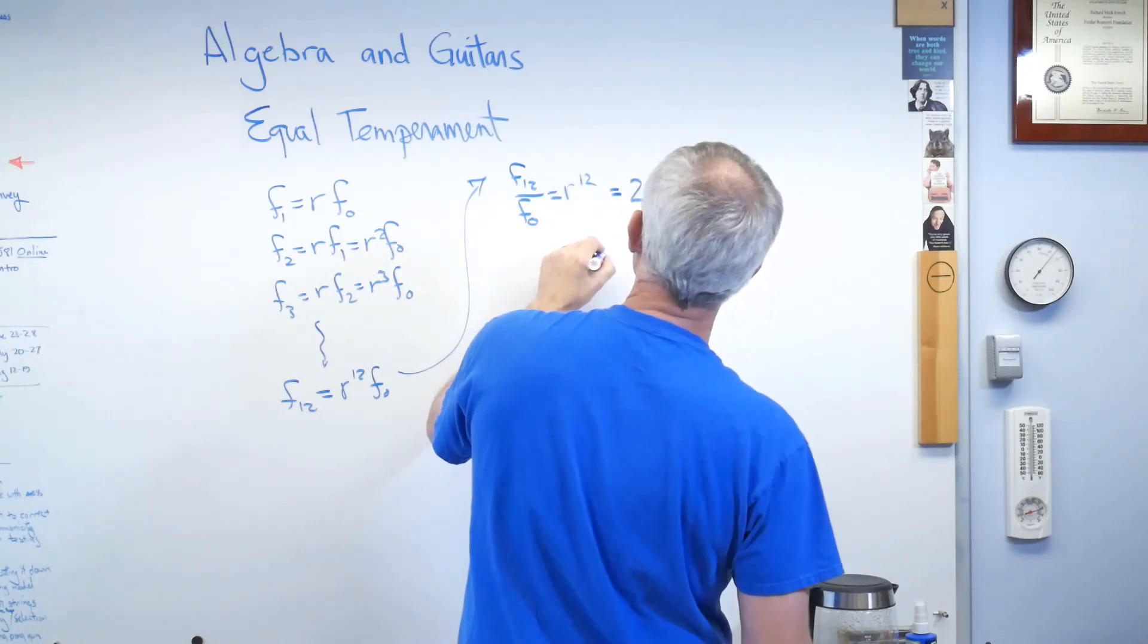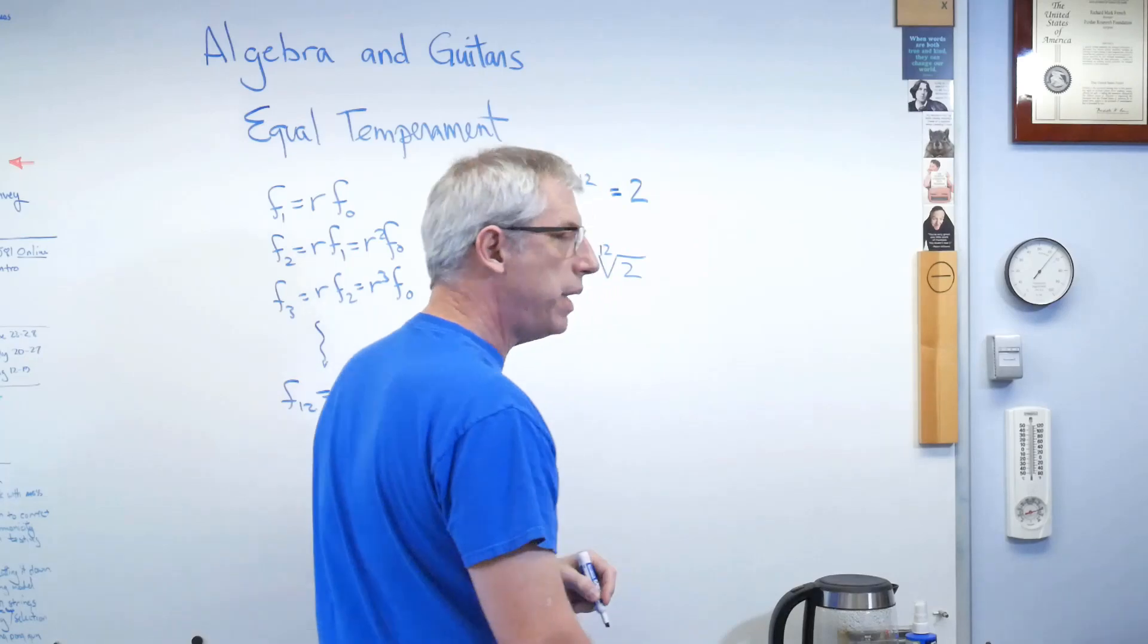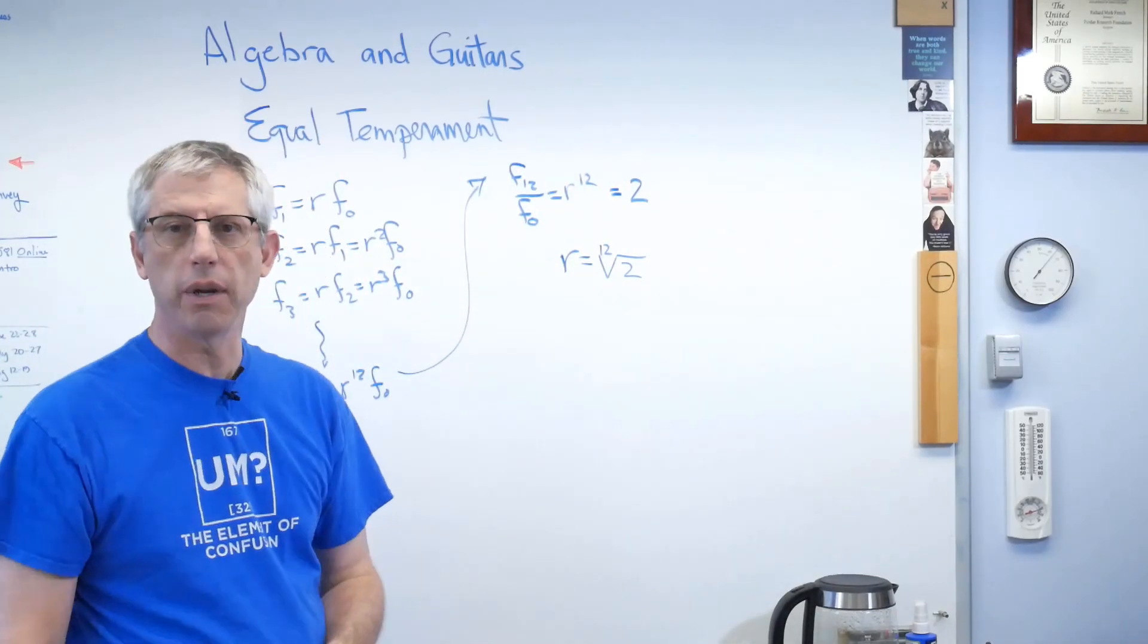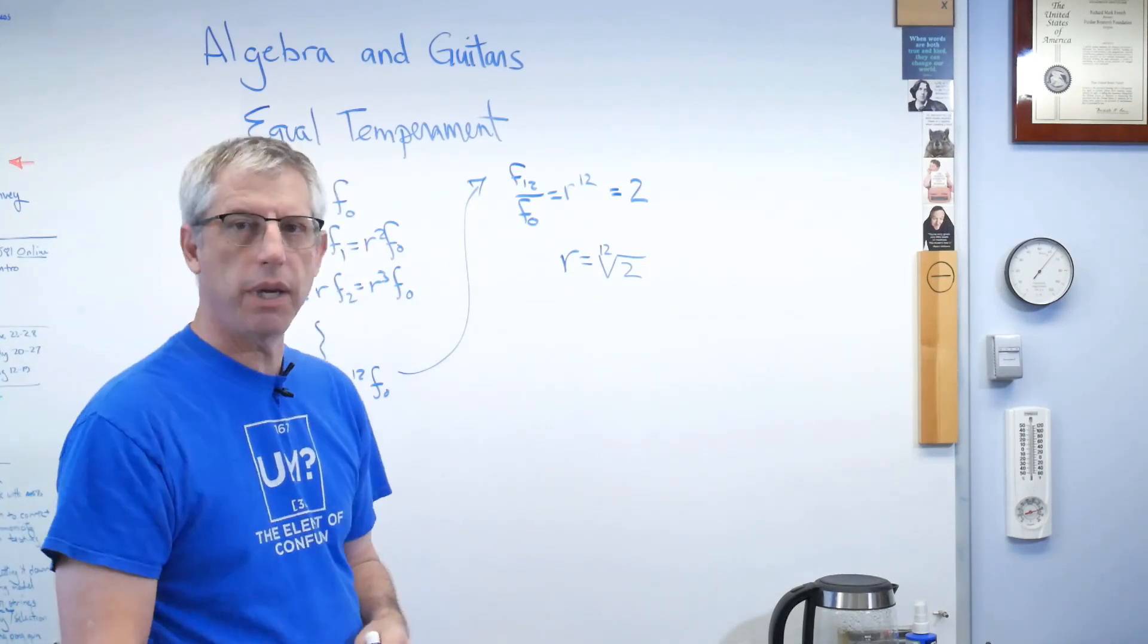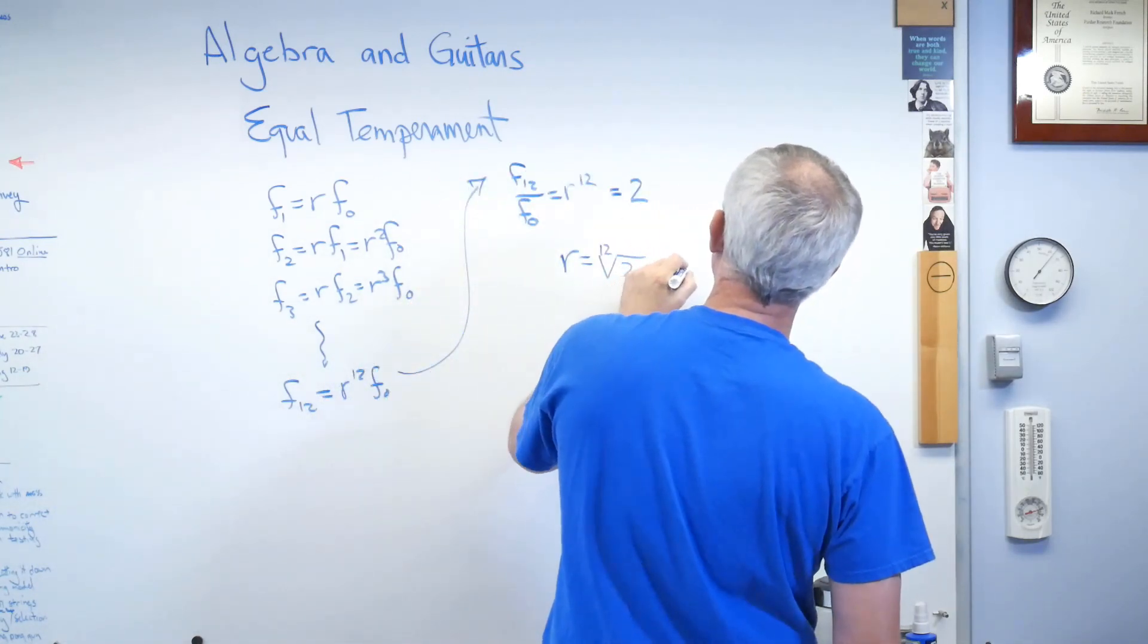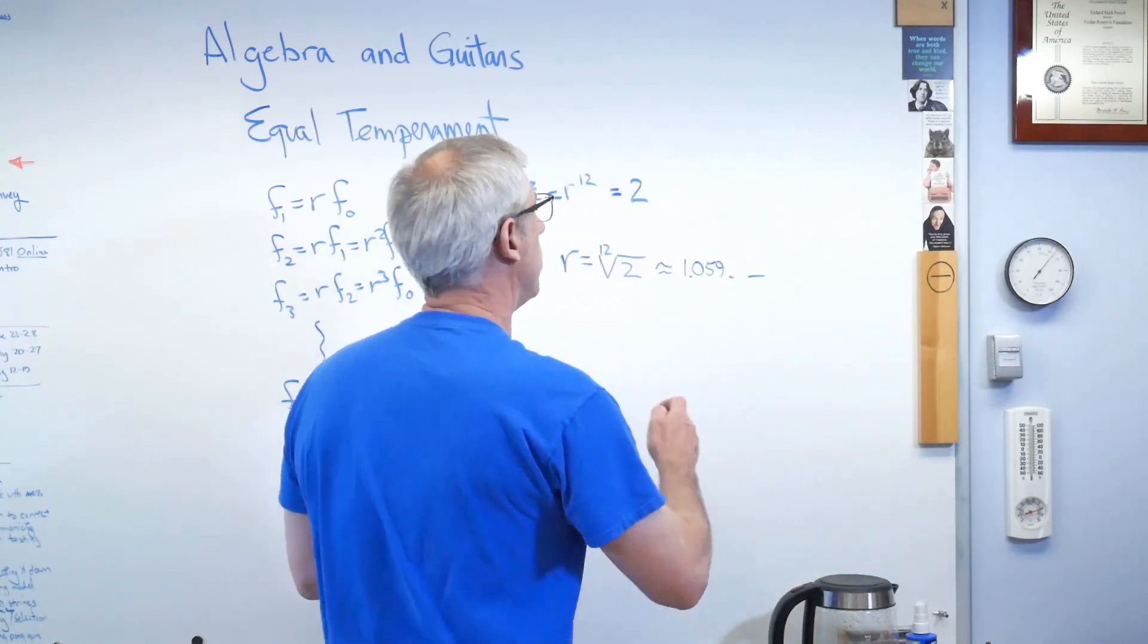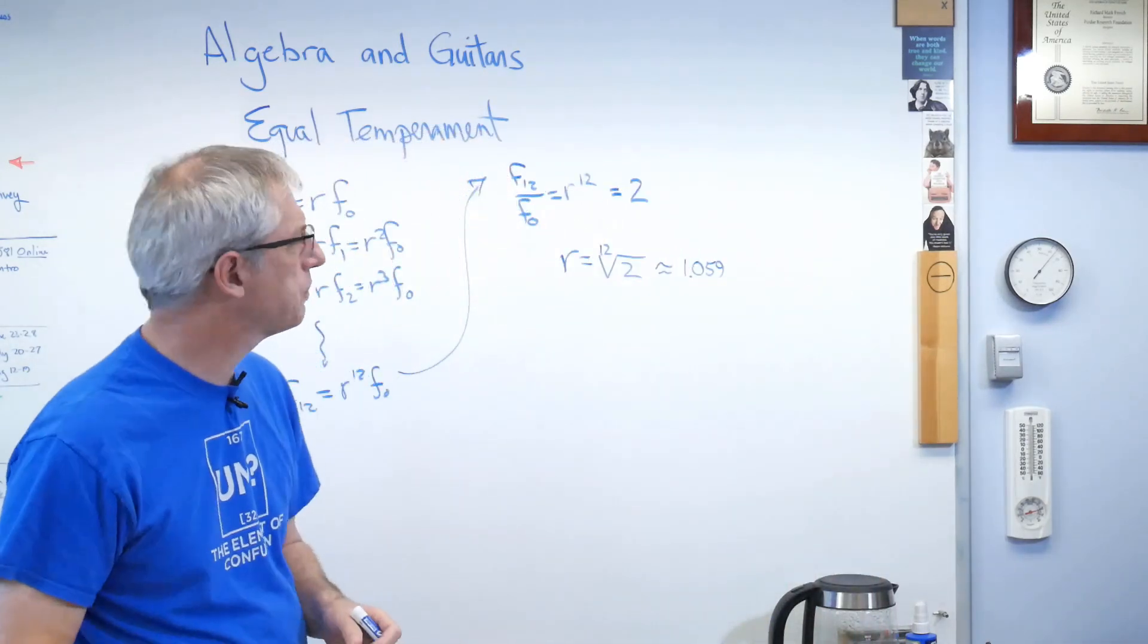R is the twelfth root of 2. Now, I've been an engineer for a long time now, and that's probably the weirdest number I've ever used with any regularity. The twelfth root of 2 actually is something I need pretty much every day. And if you figure this out on your calculator, it's 1.059 something. I forgot what it is, but the first digits are 1.059.